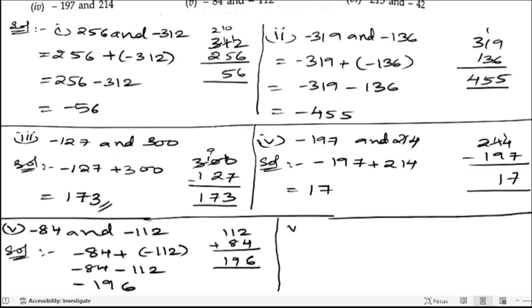Next, sixth bit. Sixth bit is 215 and minus 42. Let us write down plus 215 plus minus 42. So 215 plus into minus is minus 42.